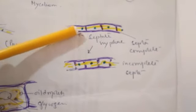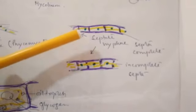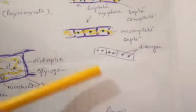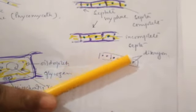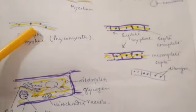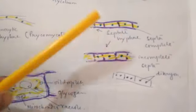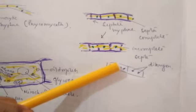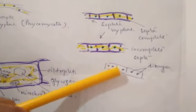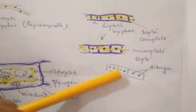So we have multinucleate coenocytic hyphae and uninucleate septate hyphae. Interestingly, fungi also contain binucleate hyphae — at a certain stage of their life cycle, each cell contains two nuclei. This is called the dikaryon phase. So fungi may have multinucleate (coenocytic) hyphae in lower groups, uninucleate hyphae with complete or incomplete septation, or binucleate hyphae during the dikaryon phase.